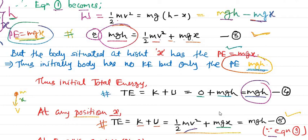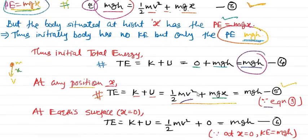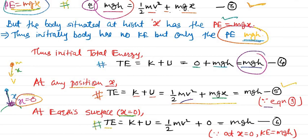At the final position, when the body reaches the earth surface, x = 0. The total energy is kinetic energy plus potential energy: ½mv² + 0. Since from equation 5 at x = 0 the total energy is mgh, the kinetic energy at the surface equals mgh. So ½mv² = mgh.